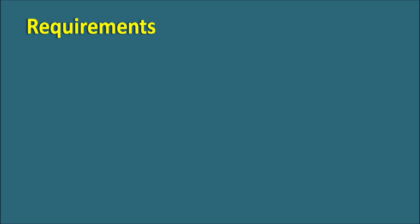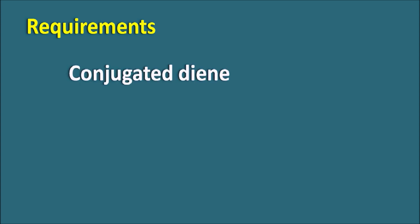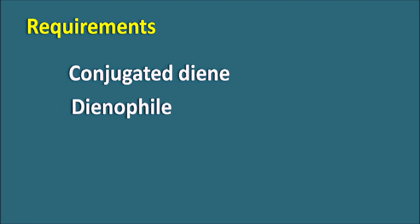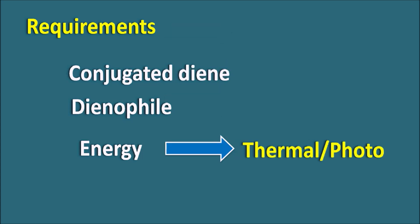First, let us see the requirements for the Diels-Alder reaction. This reaction takes place between a conjugated diene — a diene having conjugated double bonds — and a dienophile. A dienophile is a compound which can attack the diene to undergo a pericyclic reaction. Apart from this, we have to supply energy, which can be in the form of thermal energy or photo energy such as UV radiation. When this energy is supplied, the reaction takes place and produces a cycloaddition product.